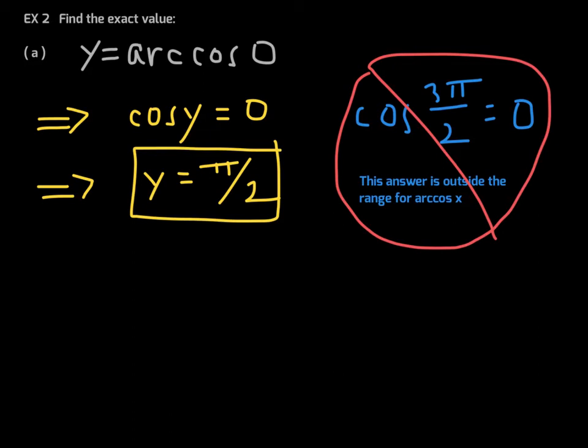Note that cosine of 3π/2 is also zero, so someone might think 3π/2 is an answer. However, 3π/2 is outside the range for inverse cosine, so it cannot be given as an answer. You only have one answer that falls within the range for arc cosine of x.